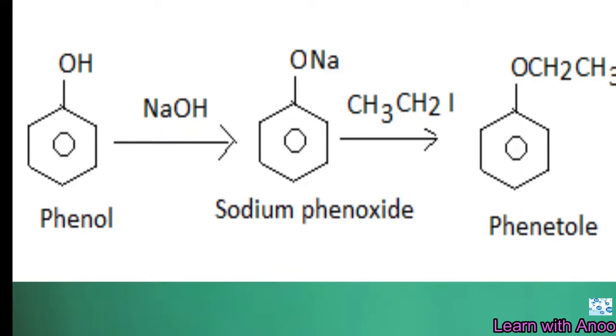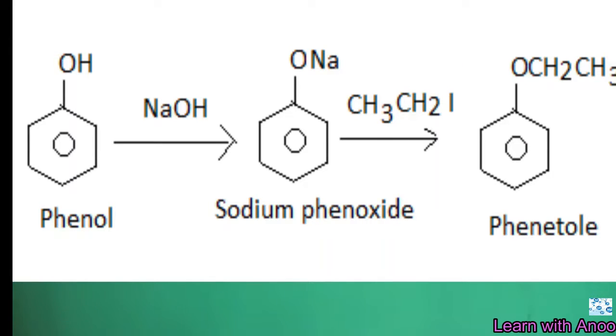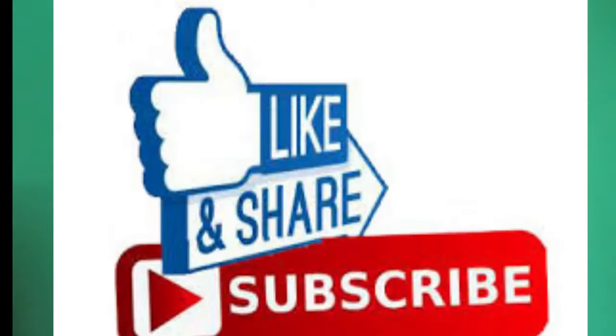What happens when phenol reacts with bromo ethane? Phenol reacts with bromo ethane in the presence of alkali to form phenyl ethyl ether, that is ethoxy benzene.